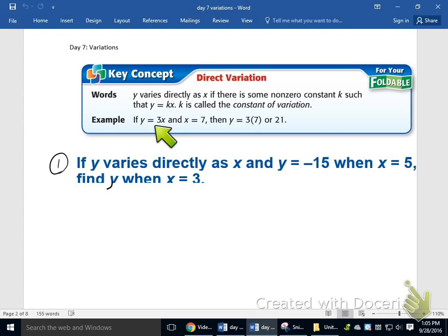So an example of a direct variation would be something like y equals 3x. You'll see that this is always a linear function that has a y-intercept of 0. If it has a y-intercept other than 0, it's not a direct variation.